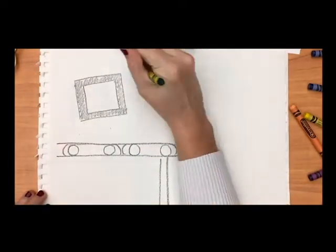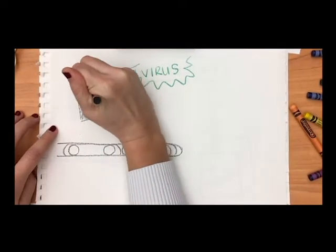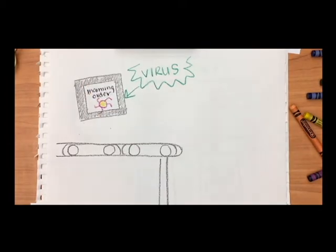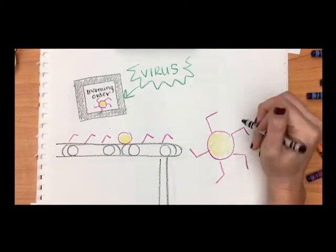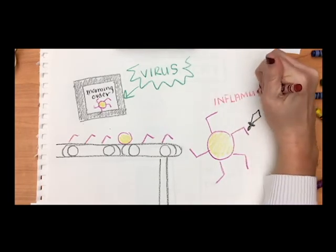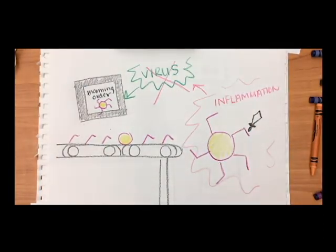Similarly, once a danger such as a virus enters the body, the immune system is alerted and all molecules assemble to form a complex called an inflammasome. Once it is formed, it can signal for inflammation in the body to come and fight the virus.